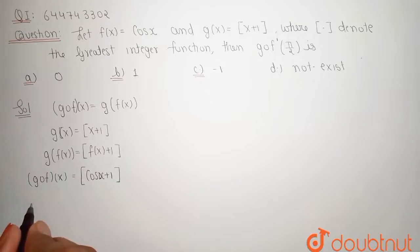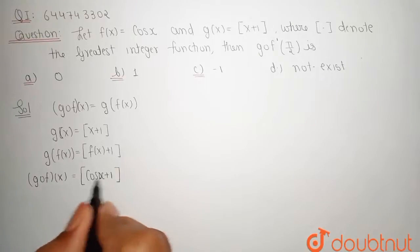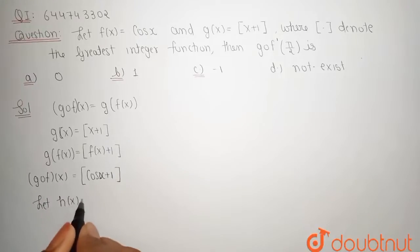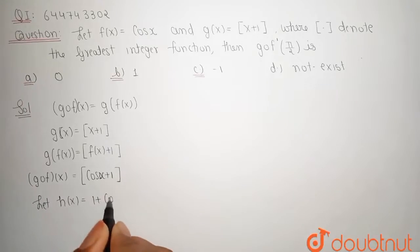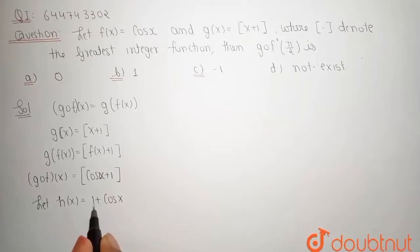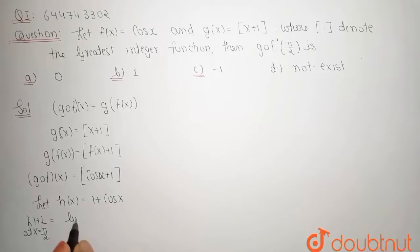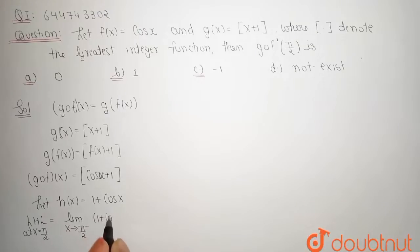Let h(x) = 1 + cos(x). We determine the left-hand limit at x = π/2, which is: limit as x tends to π/2 minus of 1 + cos(x).